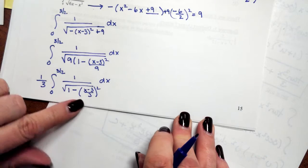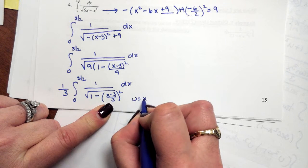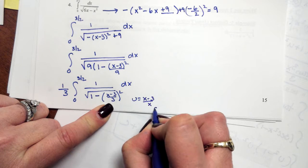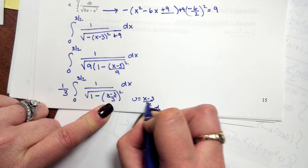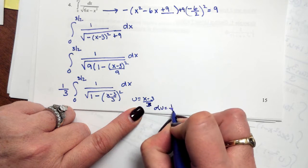So now I can do a u substitution. I'm going to let u be equal to x minus 3 over 3. My du will be 1 third dx.